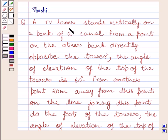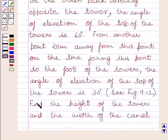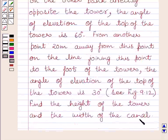A TV tower stands vertically on a bank of a canal. From a point on the other bank, directly opposite the tower, the angle of elevation of the top of the tower is 60 degrees. From another point, 20 meters away from this point on the line joining this point to the foot of the tower, the angle of elevation of the top of the tower is 30 degrees. Find the height of the tower and the width of the canal.